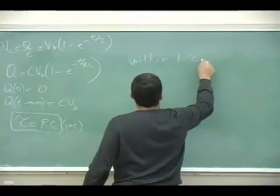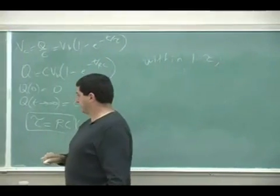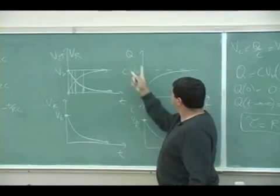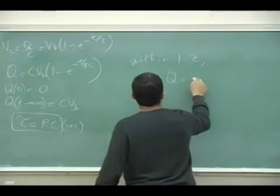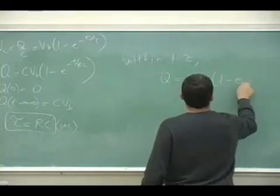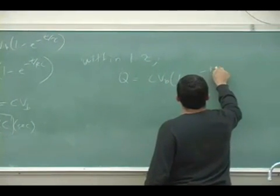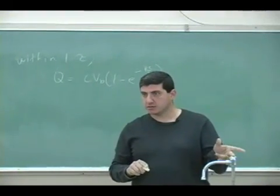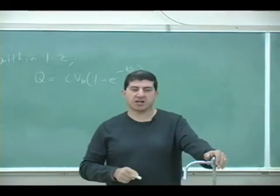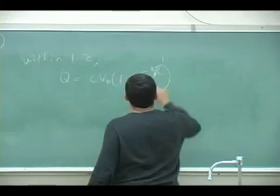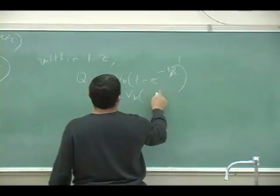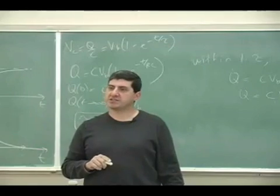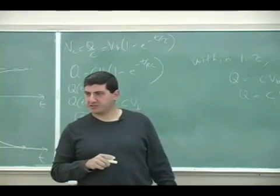Within one tau, what happens? The current drops. Within one tau, the charge charges up to... In other words, when T is equal to RC, that means the time has reached one time constant, so that means this exponent is equal to 1. You get 1 minus e to the power of negative 1. And what is that equal to? We did it in the lab — 0.632, right?